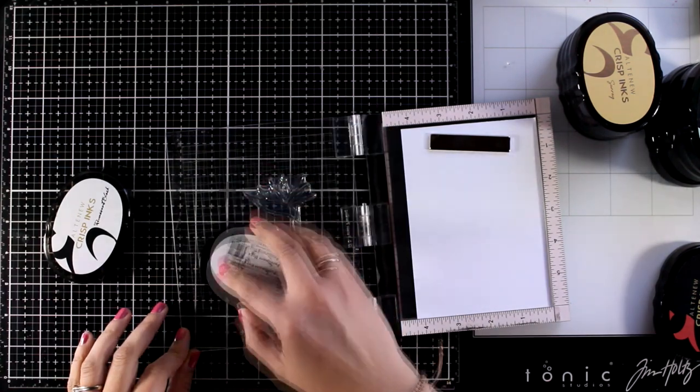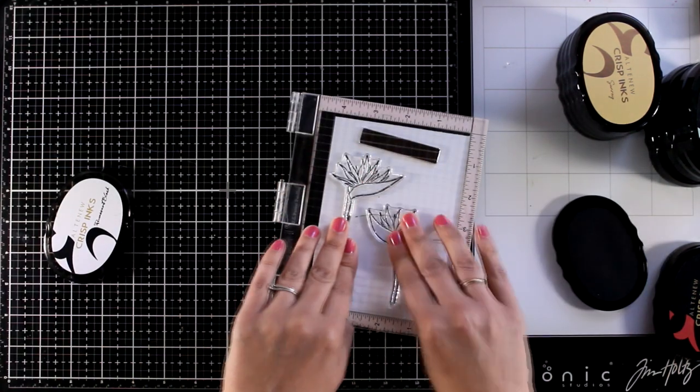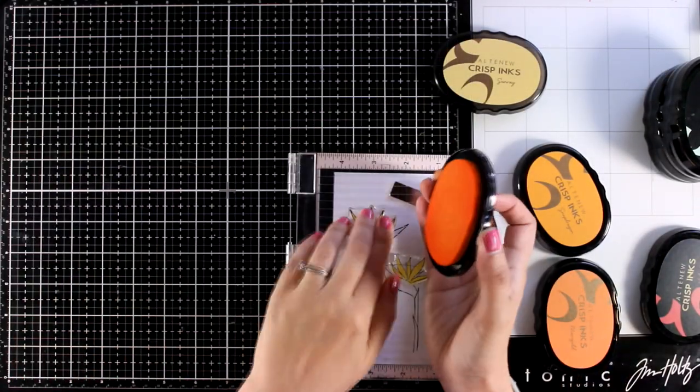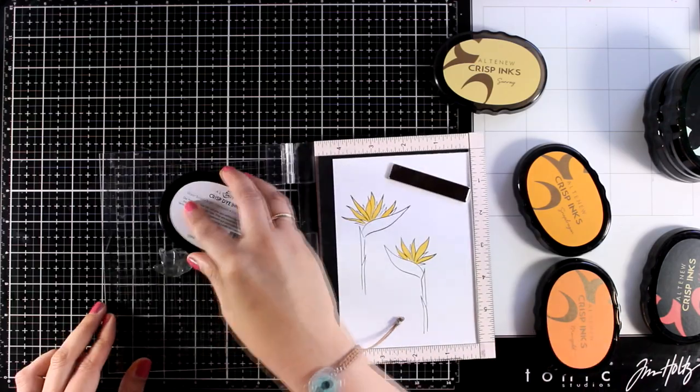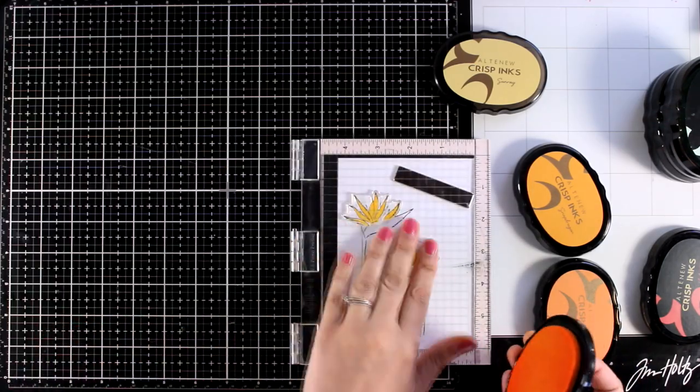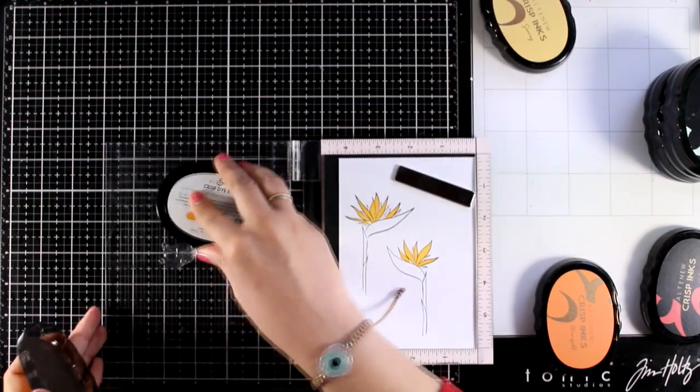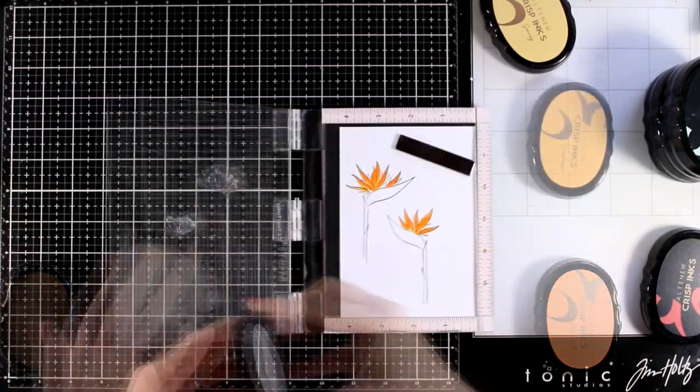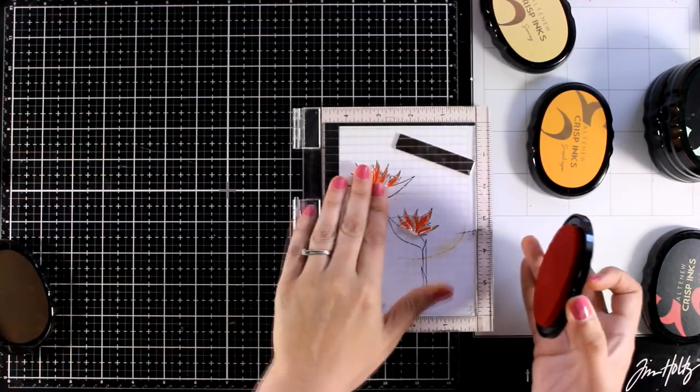So I'm starting by stamping all the outlines with black ink. For the first layer of color I went with Sunray. Then I switched to Snapdragon. And the darker of the oranges that I'm using is Marigold.